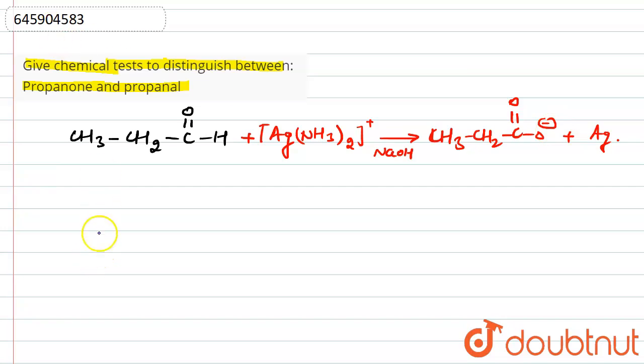But in case of propanone, this is a ketonic group and that ketonic group cannot be oxidized to carboxylate ion. By reacting with this reagent, it cannot be oxidized to carboxylate ion, so that means it cannot give this test. I hope you understand this difference.